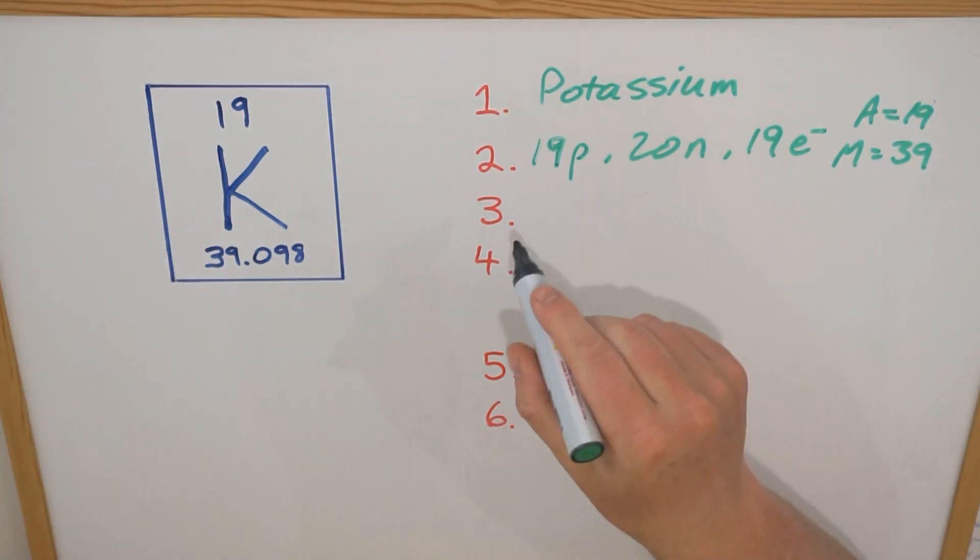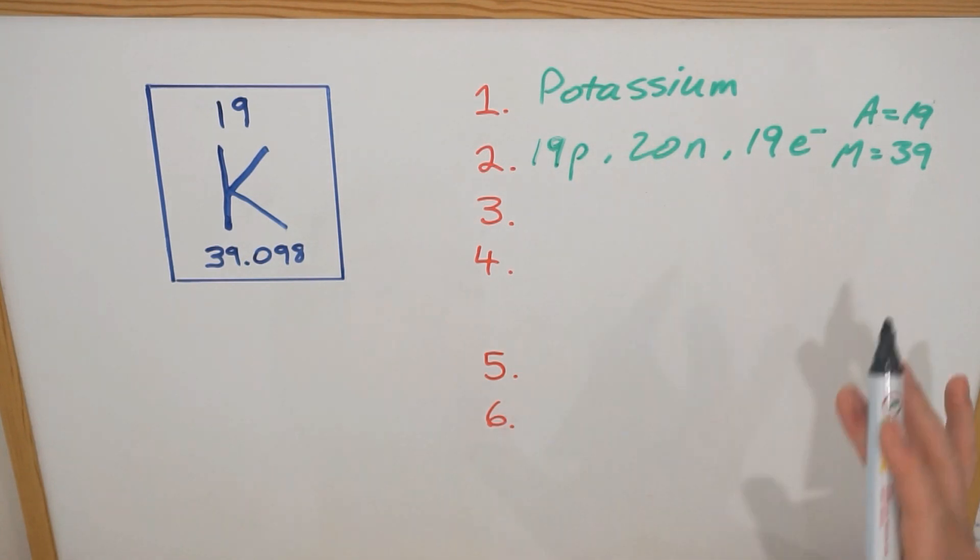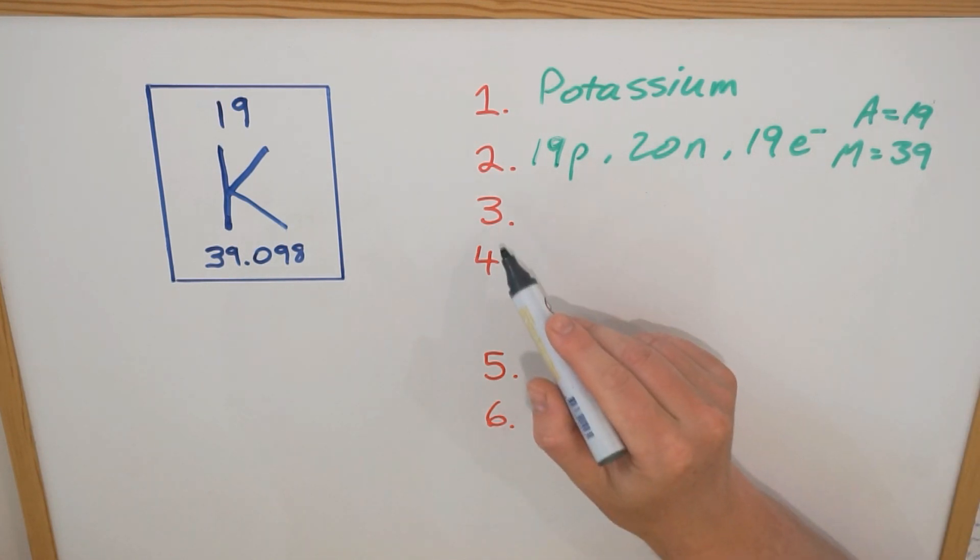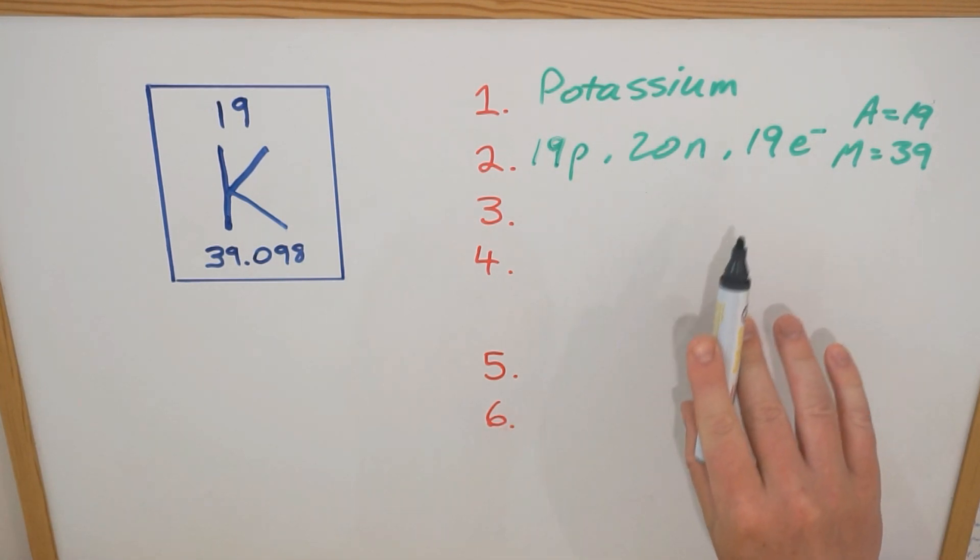That last point really covered questions 2 and 3 because question 2 was looking at the atomic number and the mass number, and the third question was about identifying the number of protons, electrons and neutrons. So let's move on to question 4, which is now that we've got the number of electrons, can we draw an electron shell diagram?